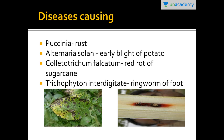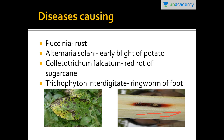Some fungi are harmful. Puccinia causes rust disease in plants. Alternaria solani causes early blight of potato. Colletotrichum causes red rot of sugarcane. Trichophyton interdigitale causes ringworm of the foot. These are only a few diseases caused by fungi — there are many more. Thank you for watching the video.